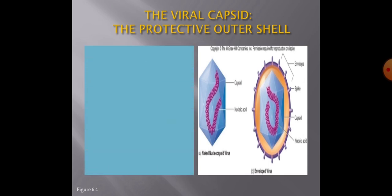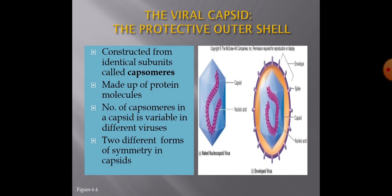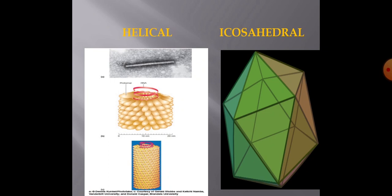The viral capsid is constructed from identical subunits called capsomeres, made up of protein molecules. The number of capsomeres in a capsid is variable in different viruses — in adenoviruses it is 252, and in herpes virus it is 162. Two different forms of symmetry in capsids are found: helical form, in which capsomeres are arranged in a hollow coil that appears rod-shaped, and icosahedral symmetry, in which the capsid is composed of capsomeres arranged in 20 triangles.